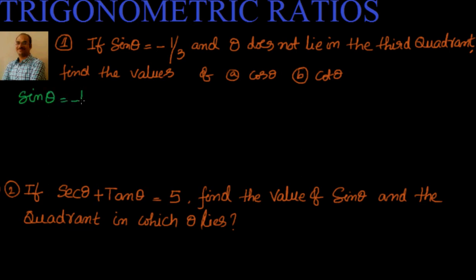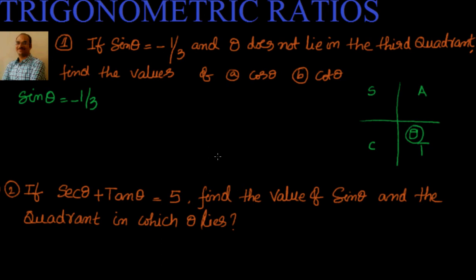We have been given that sine theta equals minus 1 by 3, so sine is negative. Across the four quadrants, sine is negative in the third and fourth quadrants. Since it's given that theta is not in the third quadrant, theta must be in the fourth quadrant.